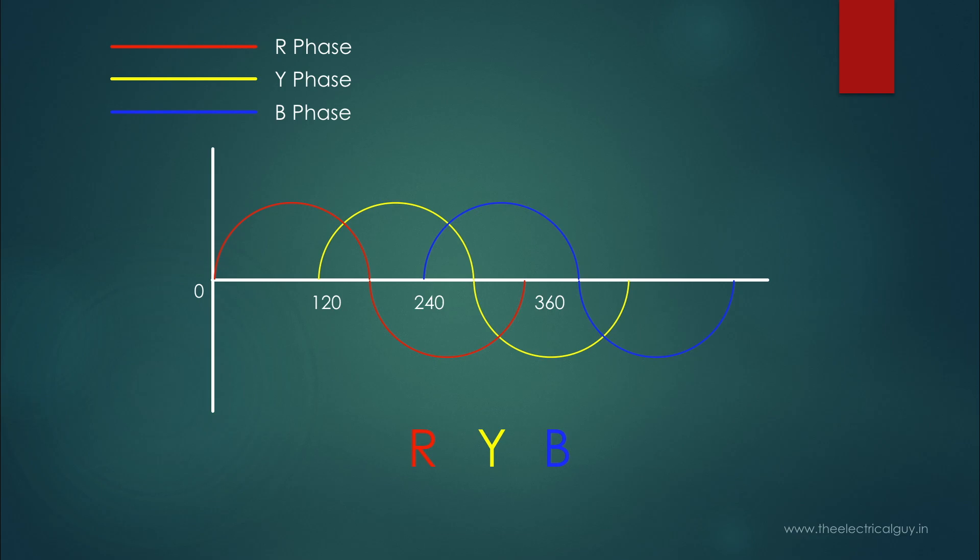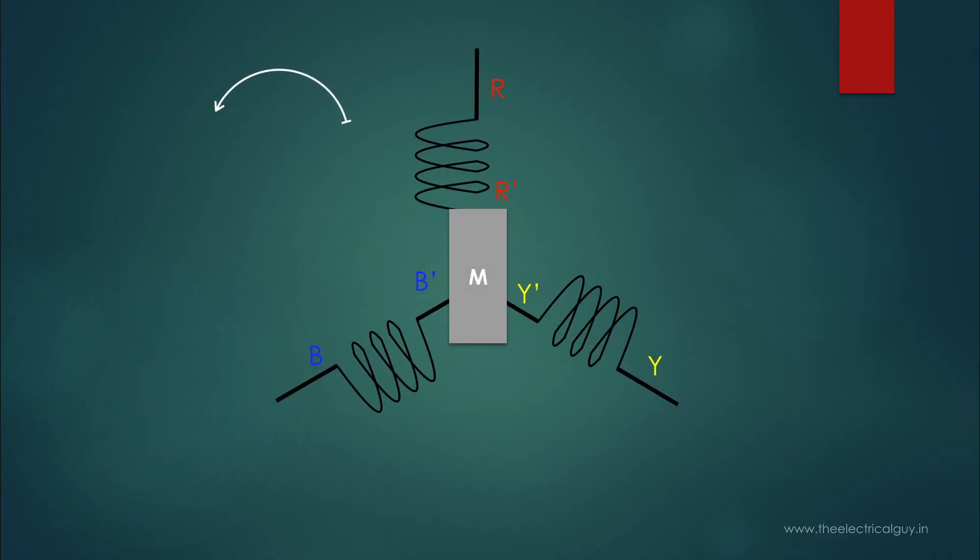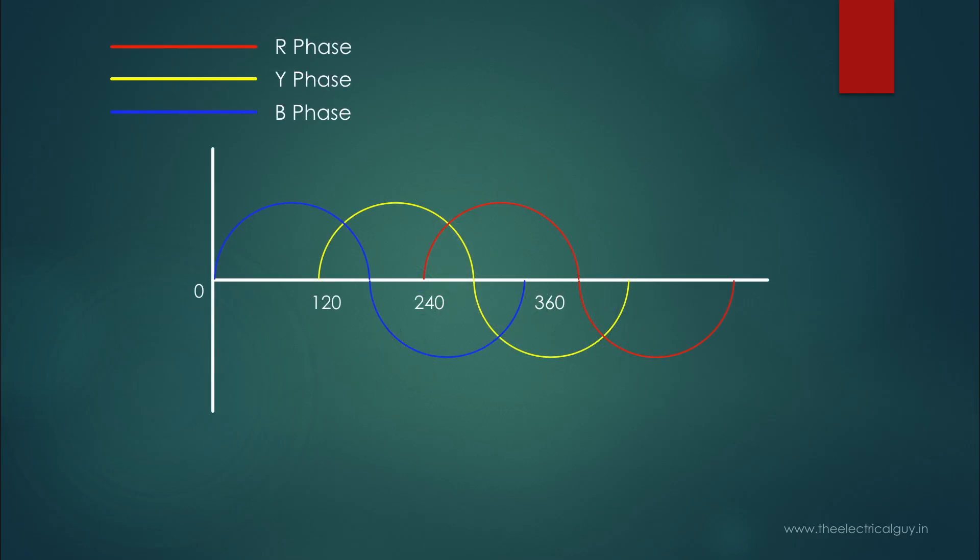Now if I would like to reverse this phase sequence, what should I do? I only need to change the direction of rotation of my magnet. Now we will rotate it in an anticlockwise direction. As we have changed the direction of rotation of the magnet, the sequence of reaching peak values will also change. Now winding B will reach its peak value first, and then winding Y, and then winding R. So my phase sequence now is B, Y, R.